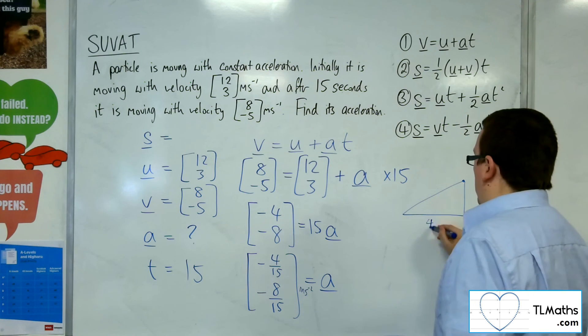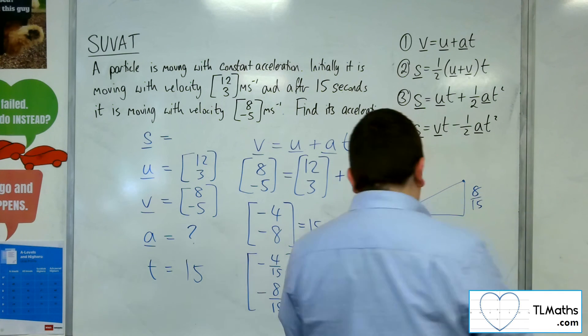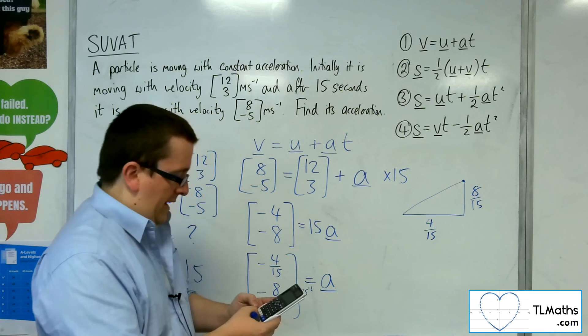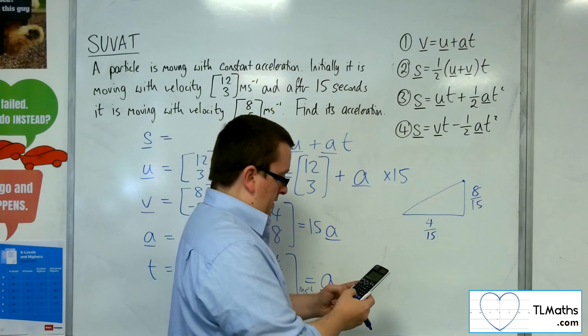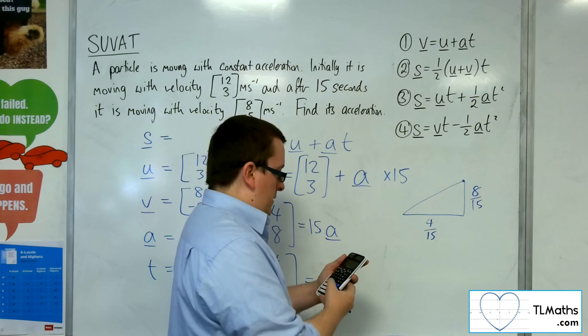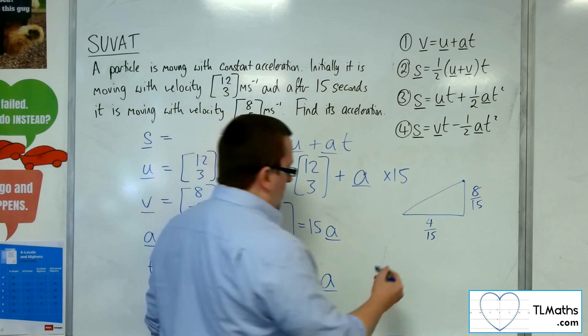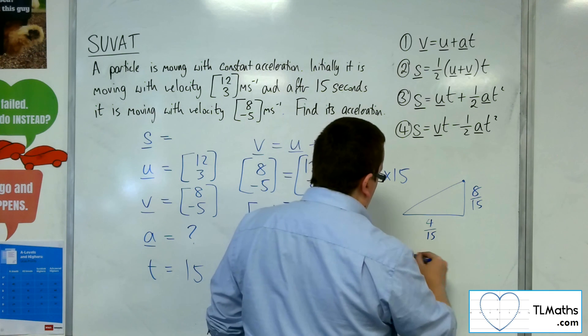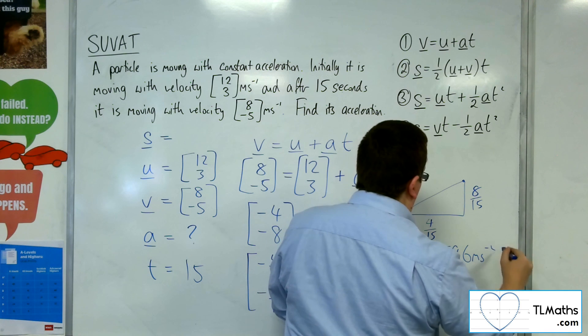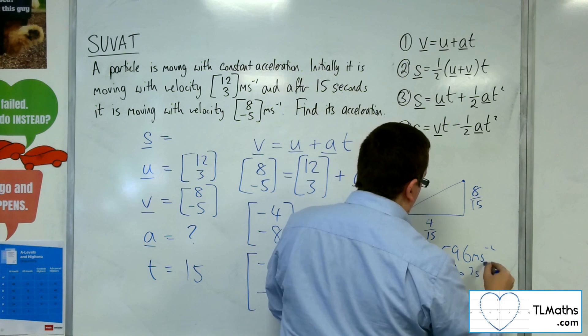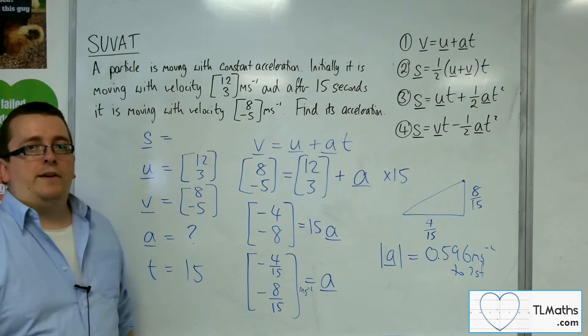We've got 4 fifteenths, 8 fifteenths, and then, using Pythagoras, so, 4 fifteenths squared plus 8 fifteenths squared, square rooted, and you get 0.596. So, the magnitude of A in this case is 0.596 meters per second per second to 3 sig fig. But, the question doesn't ask for that, but that is how you would calculate it.